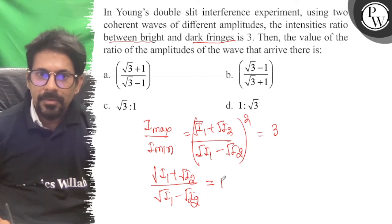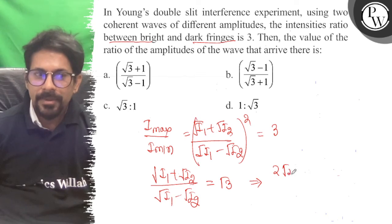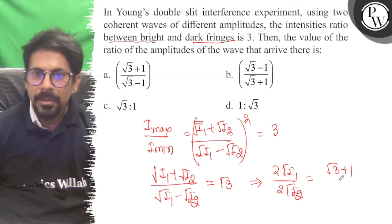This gives us root I1 upon root I2 equals (root 3 plus 1) upon (root 3 minus 1).